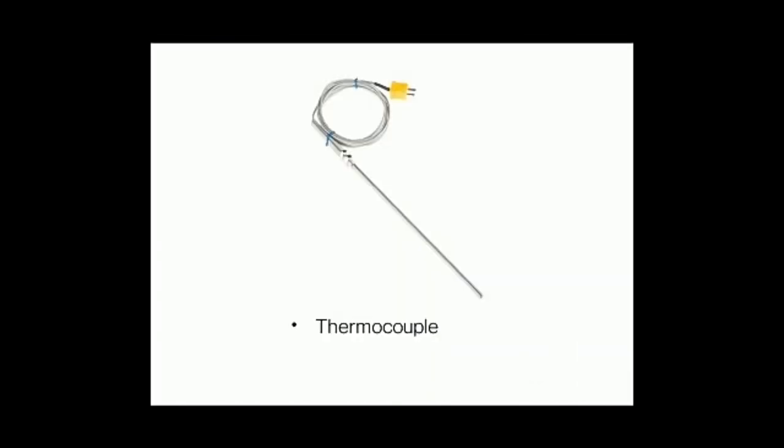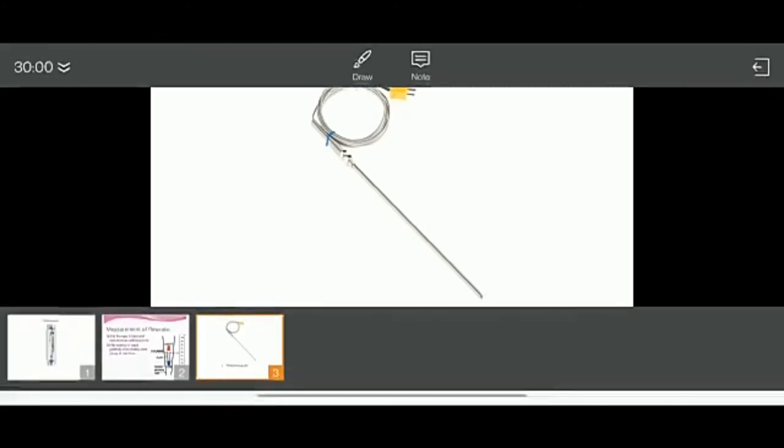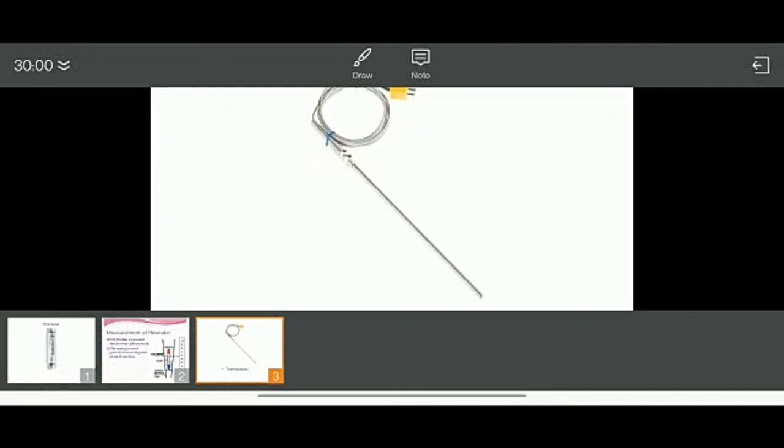Now thermocouple. A thermocouple is a sensor used to measure temperature. A thermocouple consists of two wire legs made from different metals. The wire legs are welded together at one end, creating a junction. This junction is where the temperature is measured. When the junction experiences a change in temperature, a voltage is created, and that voltage is measured, which gives the temperature.